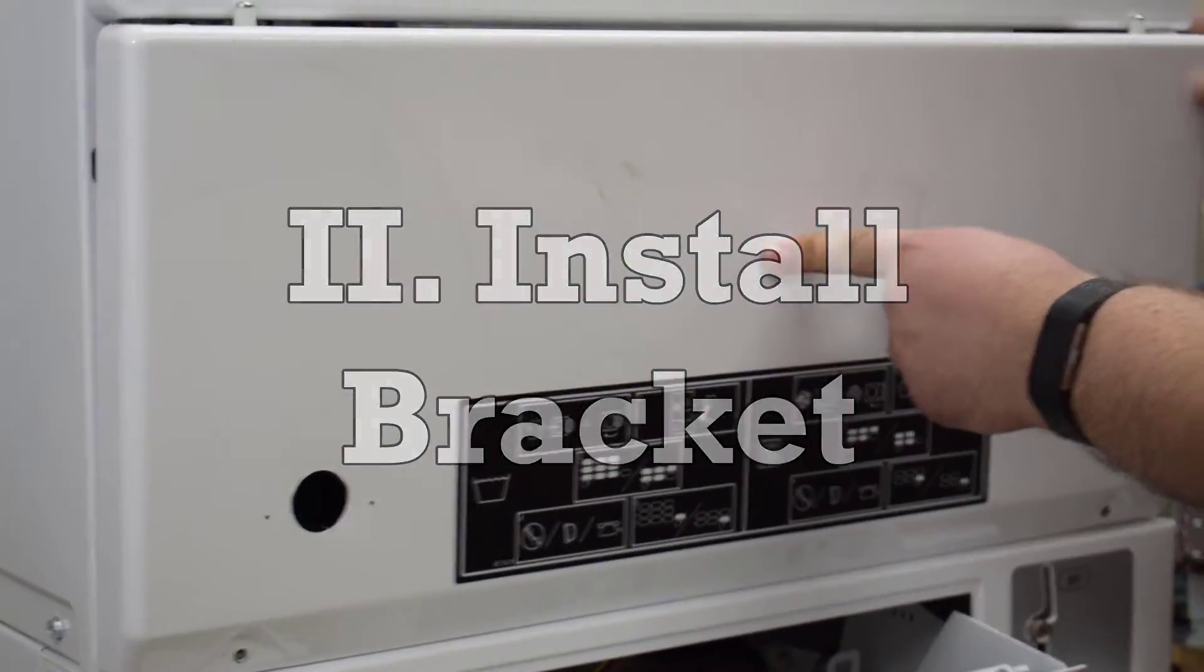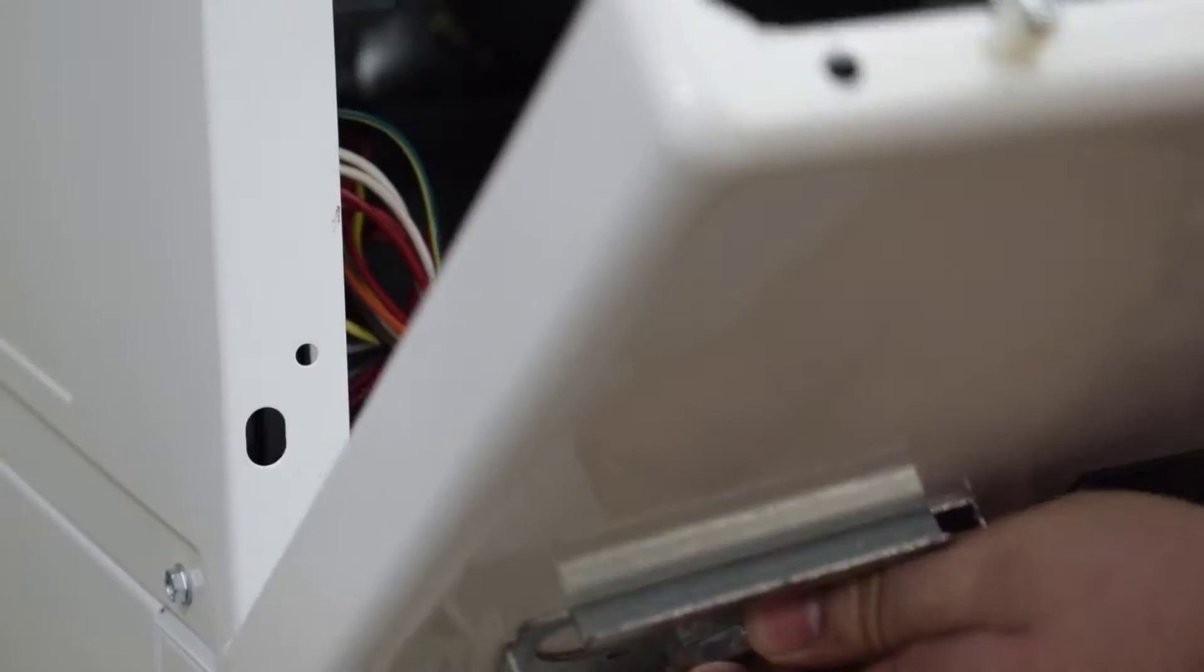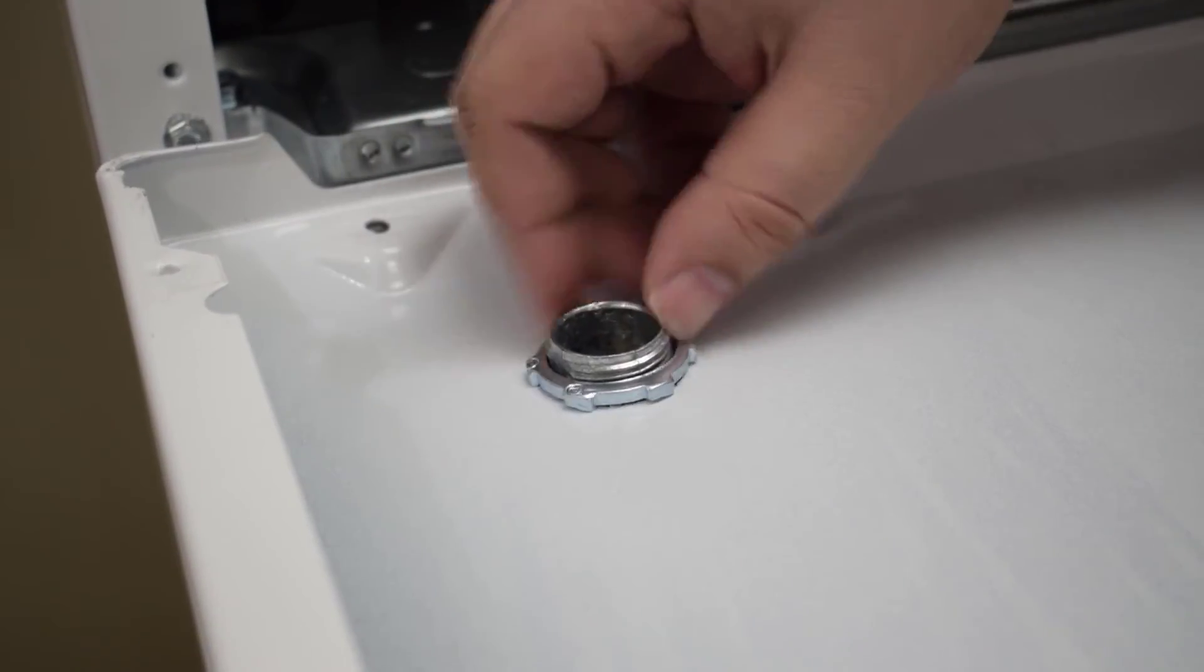For mounting both readers later, position the brackets and insert the chase nipples into the drilled holes. From behind the panel, thread and tighten the lock to secure.